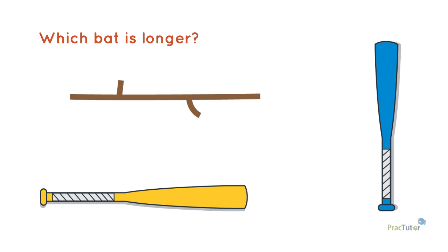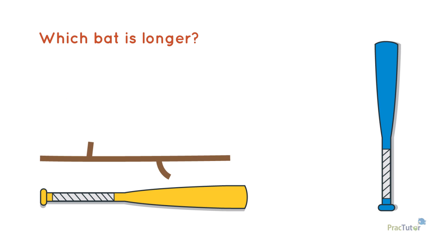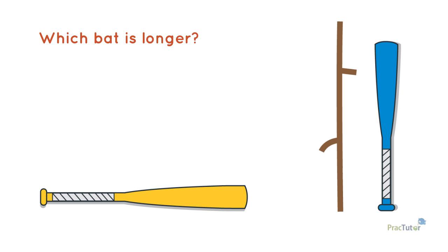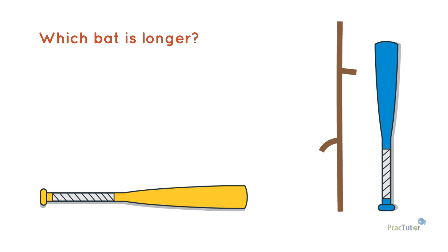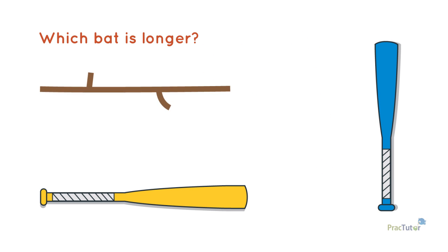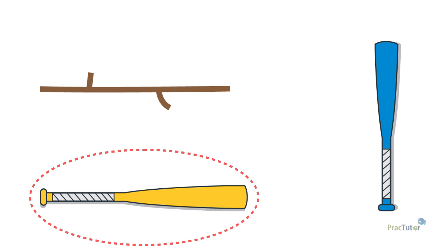Which one do you think is longer? Let's compare. First, we'll compare the yellow bat. Which is longer, the stick or the bat? Now, we'll compare the blue bat and the stick. Which is longer? If the yellow bat is longer than the stick and the blue bat is shorter than the stick, which bat is longer? Is that the baseball bat you thought was longest?